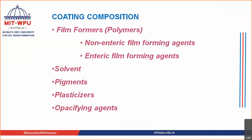We went on to see the coating composition, and we saw that if you want to do film coating, you have to prepare a solution. That solution is made up of film formers, which are polymers — non-enteric film forming agents and enteric film forming agents. Apart from that, you require solvents, pigments, plasticizers, and opacifying agents.